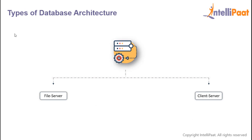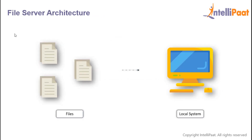Now let's have a look at the types of database architecture. The database architecture could either be file server or client server. In the file server architecture, the files are located on your local system — that is, they are local to you.